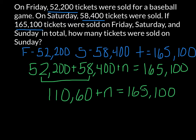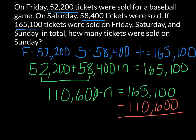Now we could guess and check, but a quicker way would be to subtract 110,600 from 165,100. That gives us 54,500. So there were 54,500 tickets sold on Sunday.